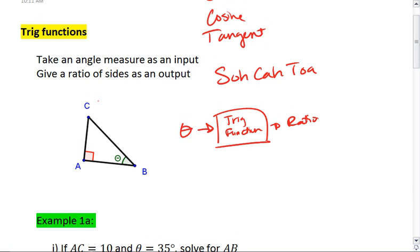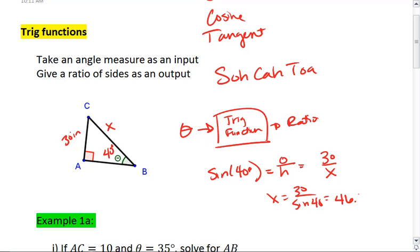For example, we could say that if this was a 40 degree angle, and this was the 30 inch side, we're looking for our hypotenuse. We could use sine. We know that sine of 40 degrees, where 40 degrees is our input, will equal the opposite over the hypotenuse, which in this case is 30 over x. x equals 30 over sine 40, which ends up being about 46.67 inches.